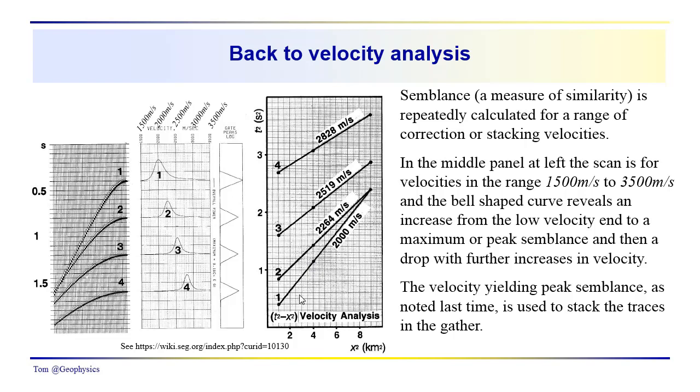This would be the t squared x squared plot. Remember, we transform these hyperbolas into straight lines when we transform the coordinate t and coordinate x into, when we square both of those coordinates, we end up getting those hyperbola transformed into straight lines. The slope over here, 2,000 meters per second.